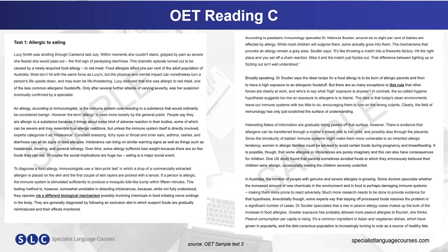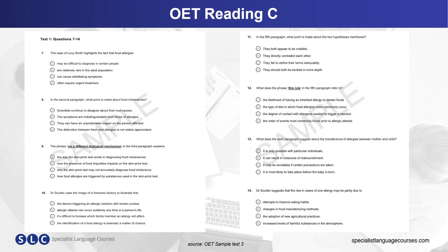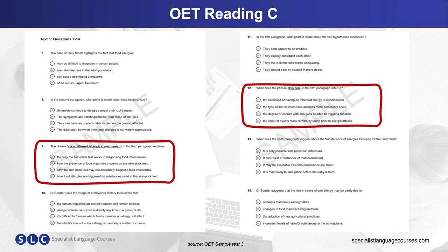Each text will have a title — as we can see here, it's 'Allergic to Eating.' For each text you have a set of eight questions. Two of these will be lexical questions where you need to understand what language is referring to, such as 'it' or 'these,' and understand what meaning is added by using certain language. The language will be highlighted in bold in the texts.